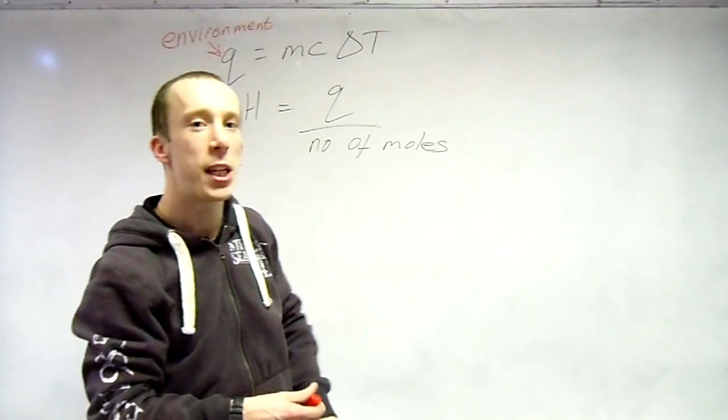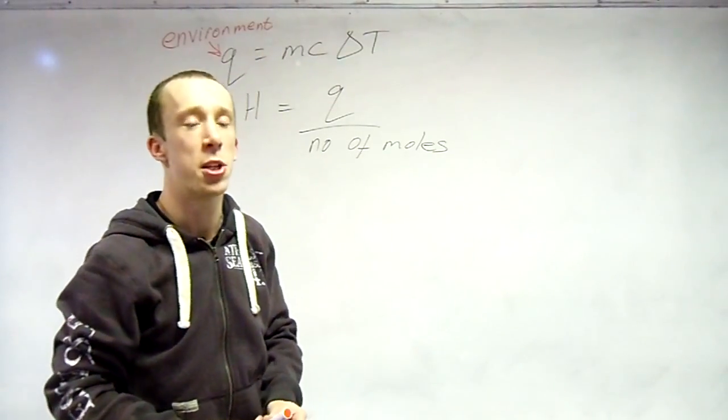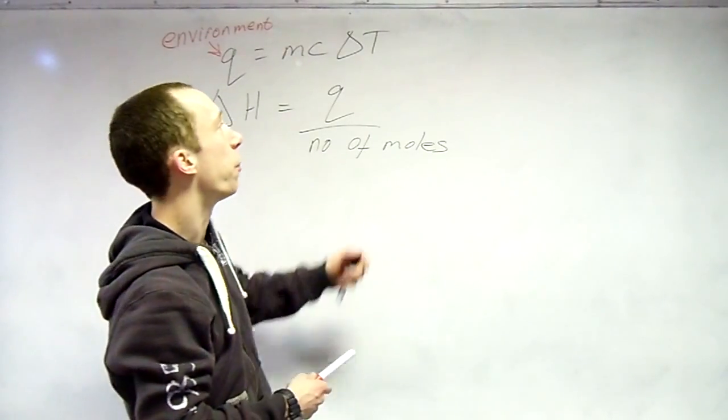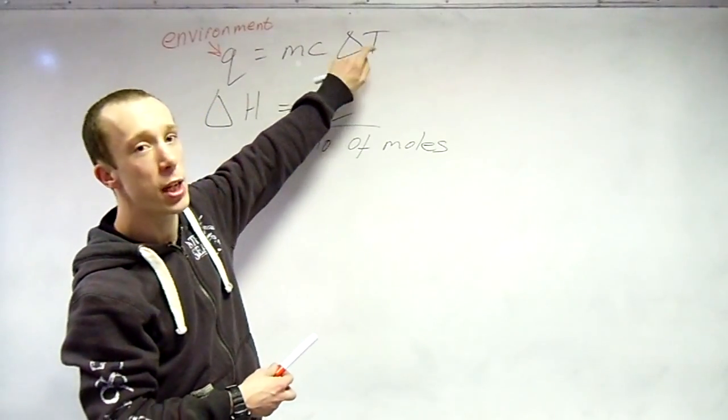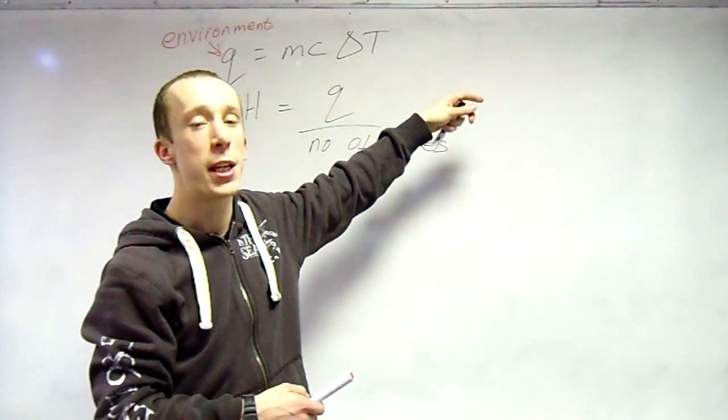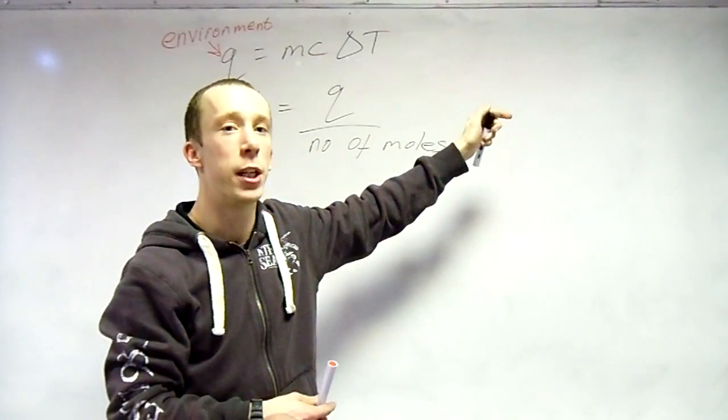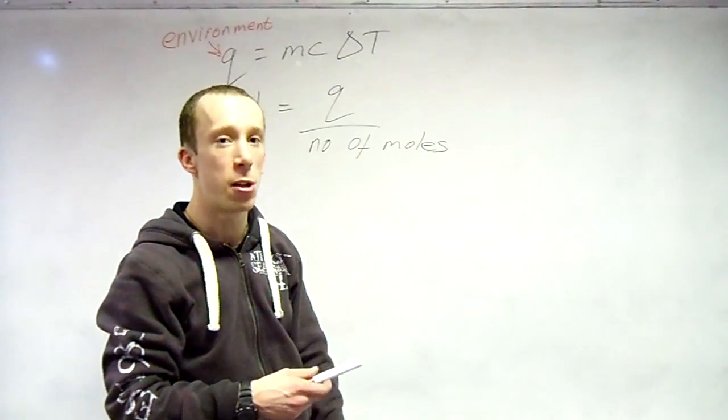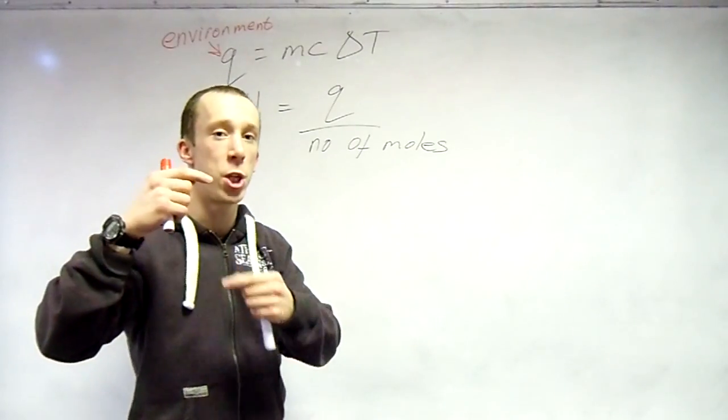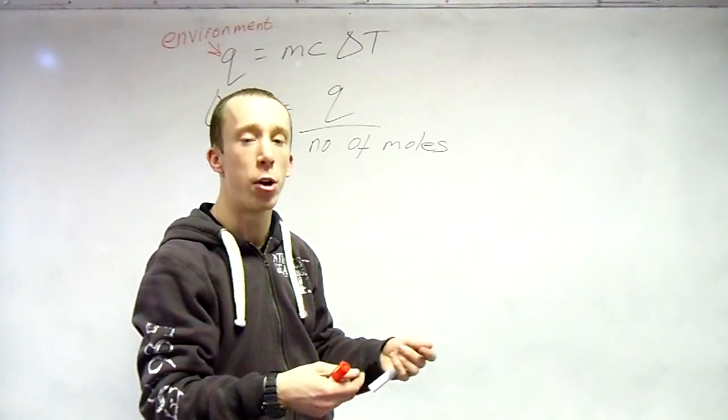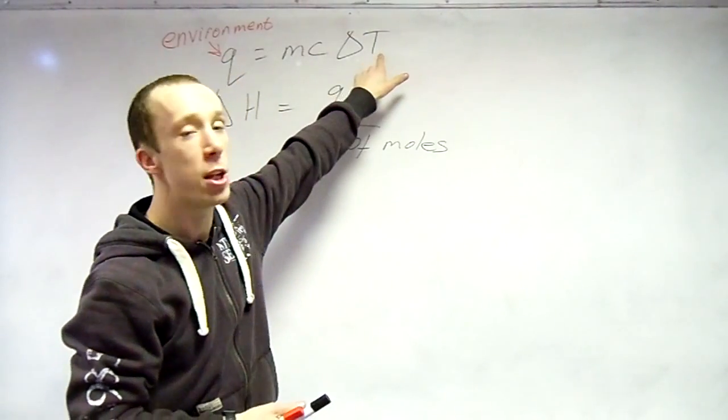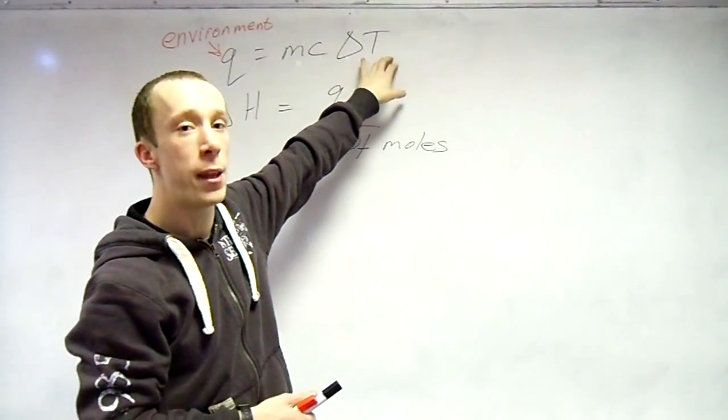Environment. C, specific heat capacity. You will always be told that. Typically water 4.18, but like I said, it will always be given to you. And delta T, change in temperature. By definition with C, it should be the change in Kelvin, but it makes absolutely no difference whether or not your change is in Celsius. Because from 30 Celsius to 60 Celsius, a 30 Celsius change, whereas if you add 273 to both numbers, it is still a 30 Kelvin change. So the actual change makes no difference. You just plonk that number in there.